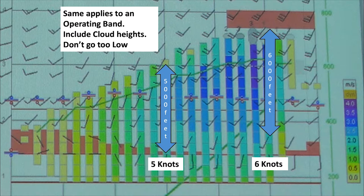The same applies to operating bands, including cloud heights — not to go below the operating band. In the middle of the screen we've got a 5,000-foot operating band, which gives us 5 knots. A little bit later on, thermals go higher but start a little bit higher, giving 6,000 feet of drop from the inversion, so we get 6-knot thermals.